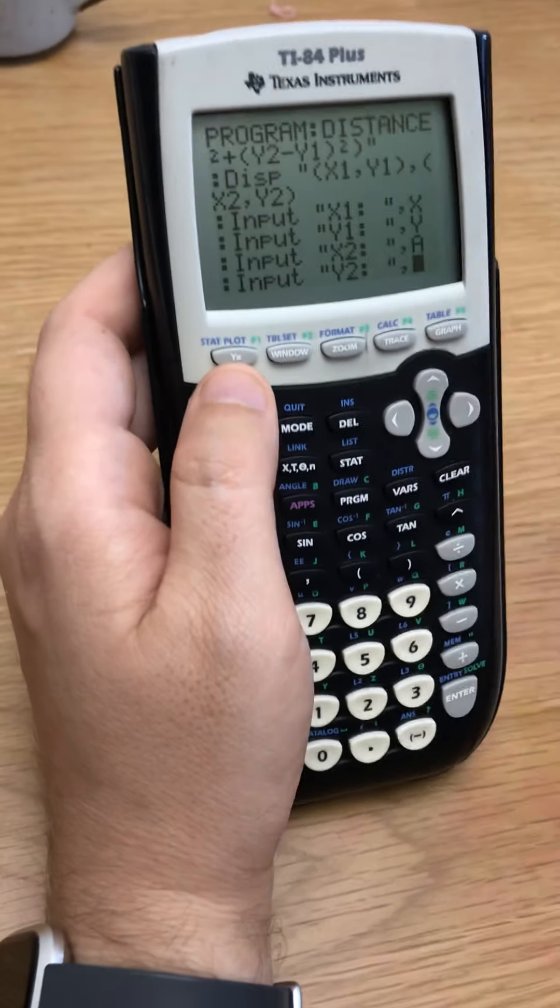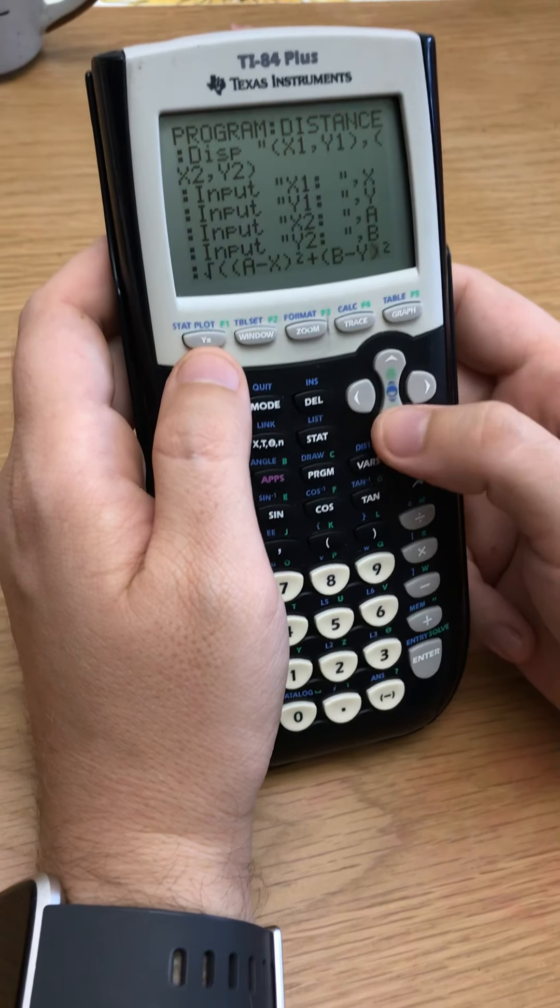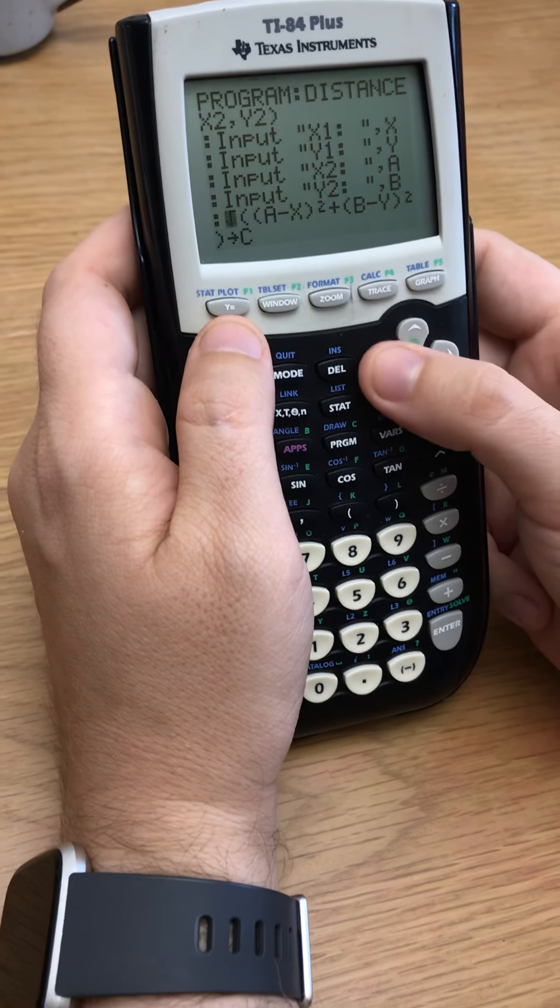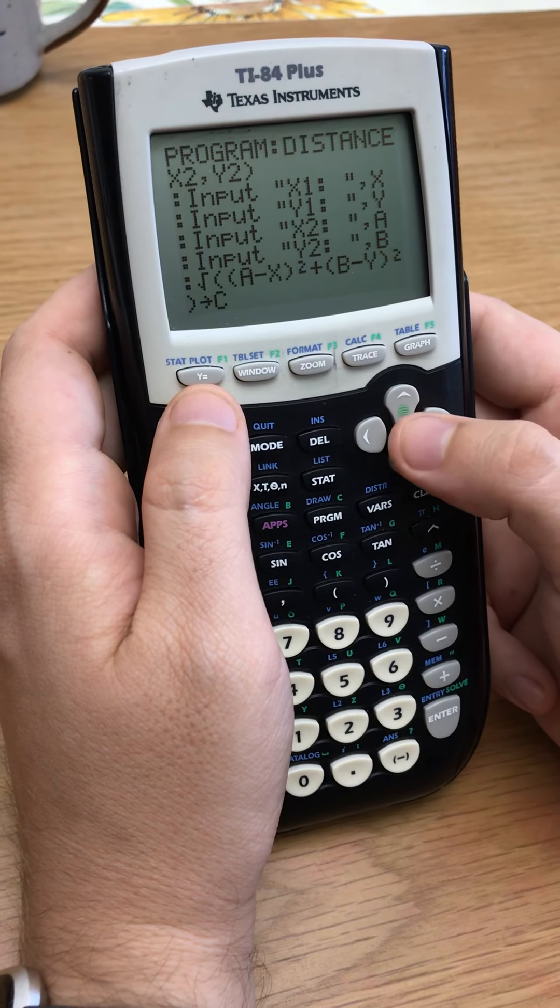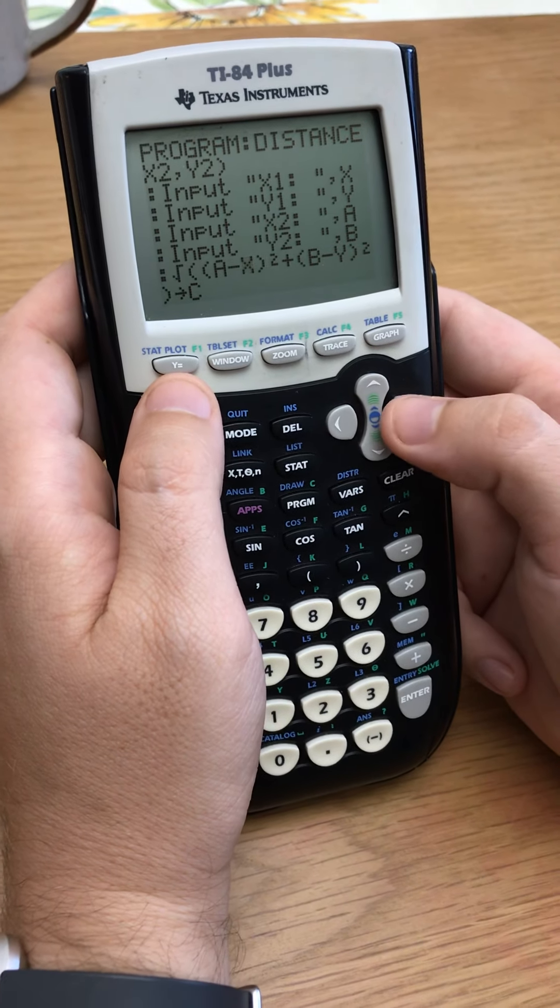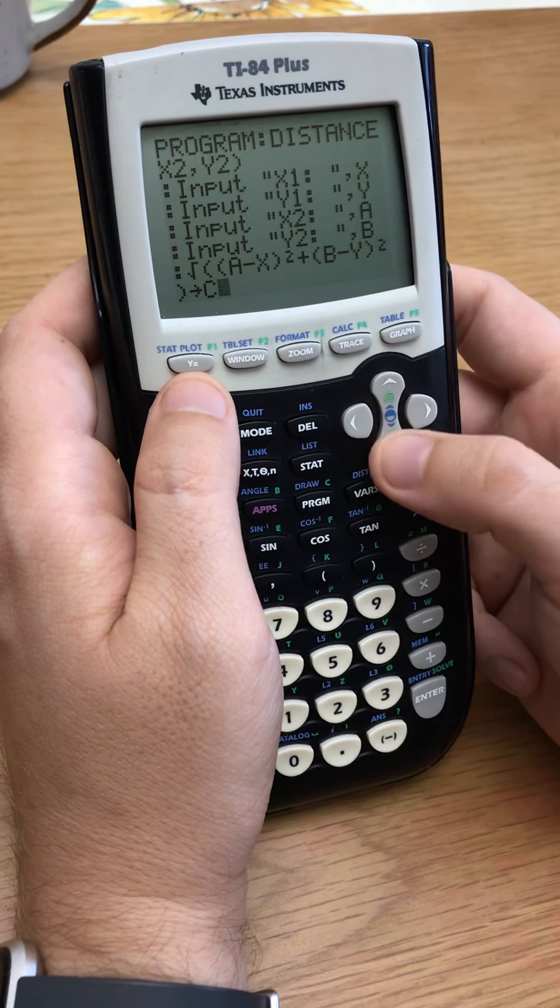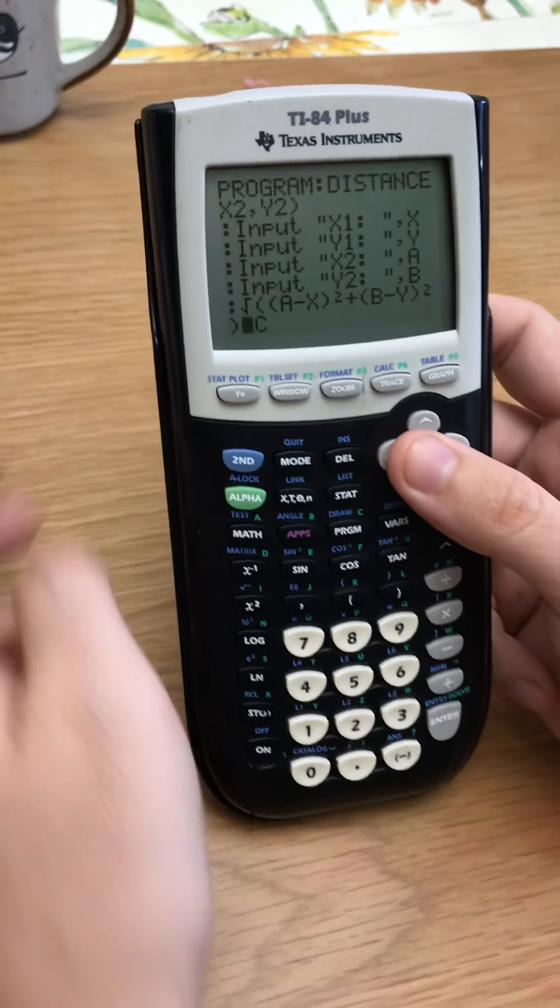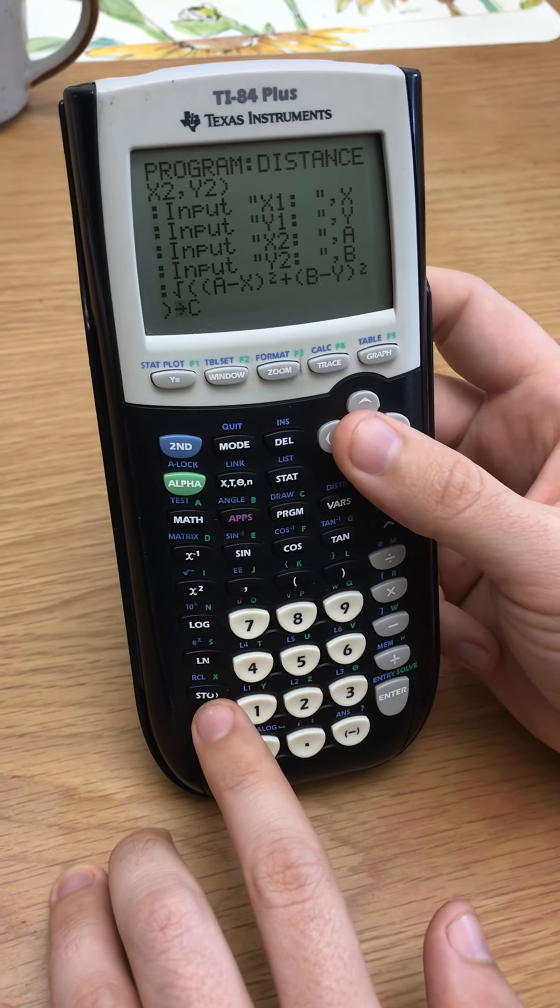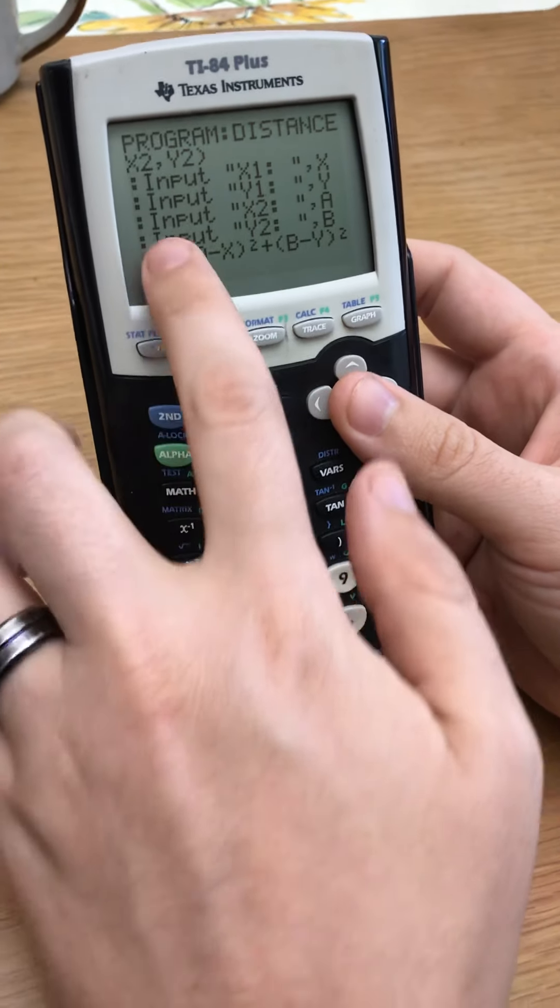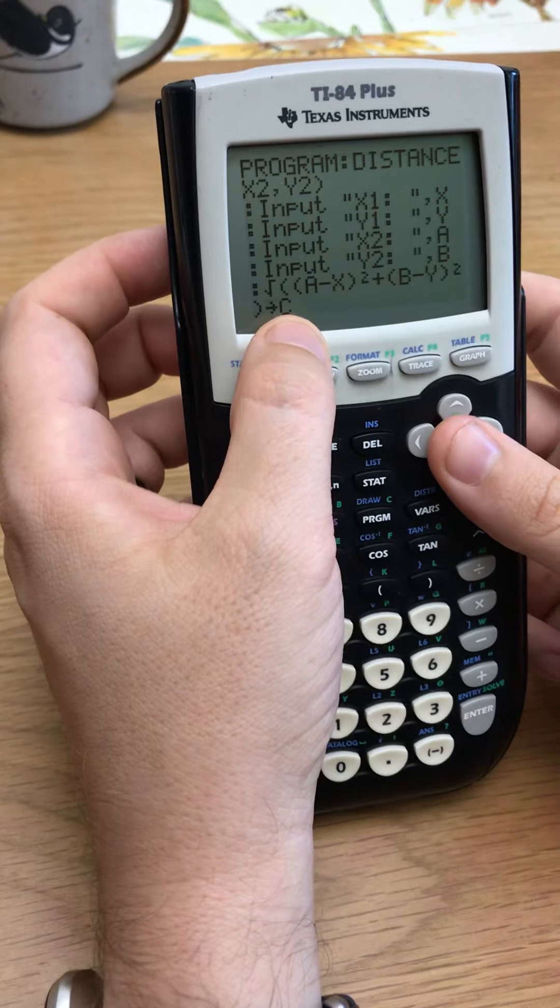But after you do your inputs, step two, you want to do step three, which is the actual formula. So you want to do the actual formula, which in this case is the distance formula, so the square root of a, which is x2, x2 minus x1, b, which is y2, y2 minus y1, squared, all that. And then this little arrow thing right here, that's actually this key down here, super important, and s-t-o, it means store, so I'm going to store that answer, all of that math stuff that's happening, I'm going to store all of that as the letter c.